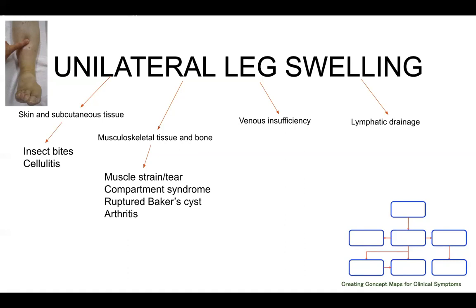Compartment syndrome is another very important diagnosis, particularly for patients in hospital, and is most often due to injury. It presents with the five P's, which are worth remembering: pain, paralysis, paresthesia, pallor, and poikilothermia.